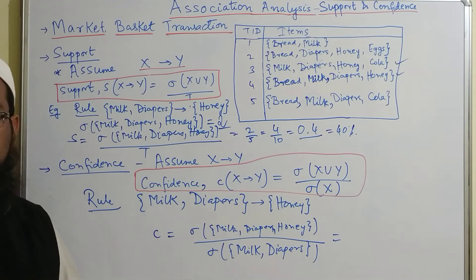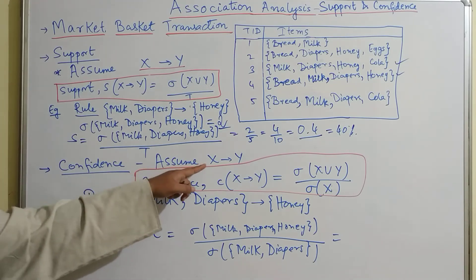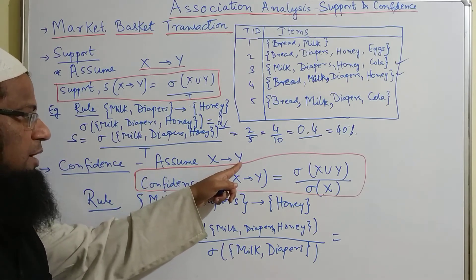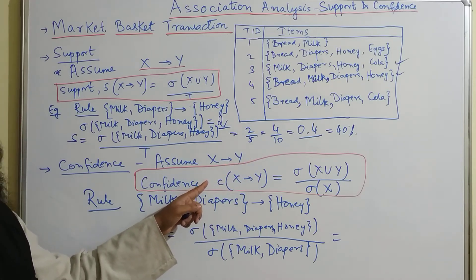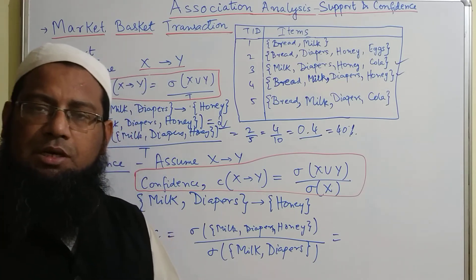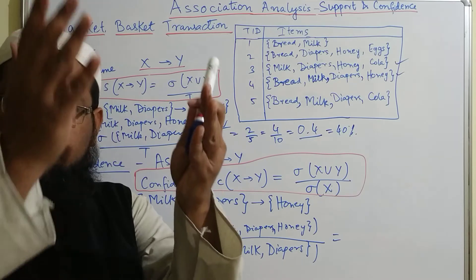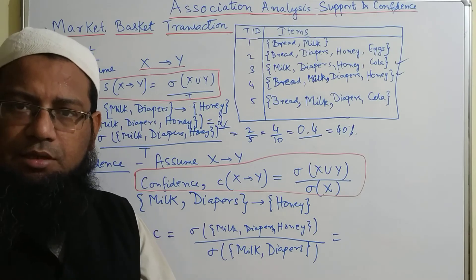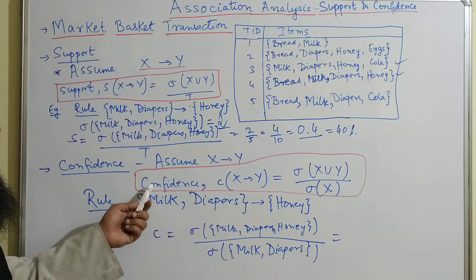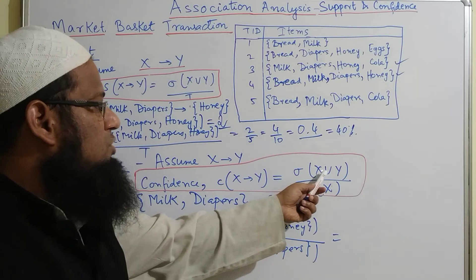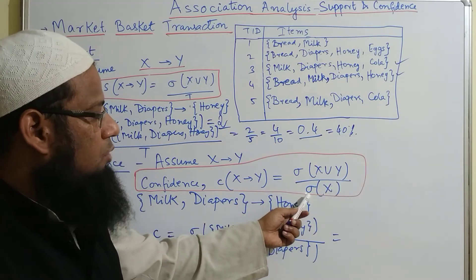Next, we come across the concept of confidence. Assume we have a relation X implies Y, meaning the frequent item set of Y is present wherever the item set of X is present in the transaction. The confidence C of X implies Y is equal to the support count of X union Y divided by the support count of X.